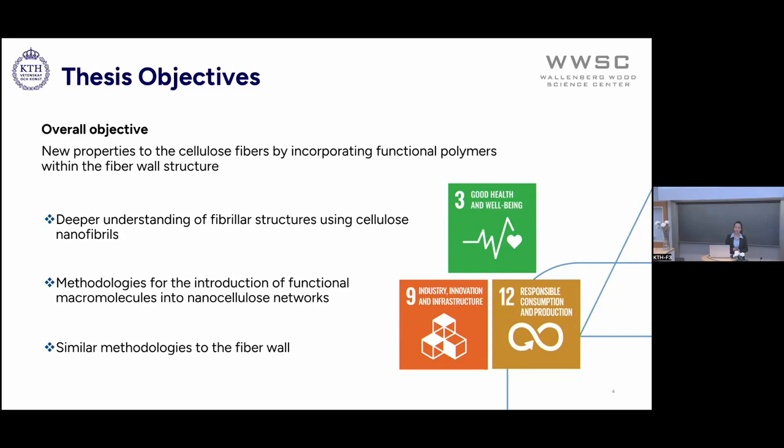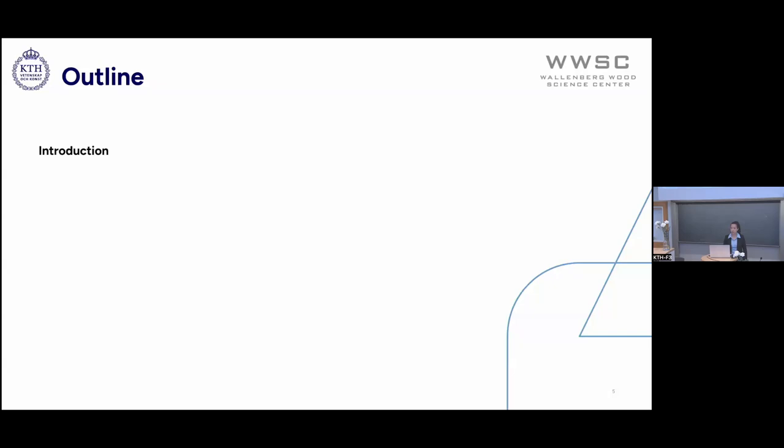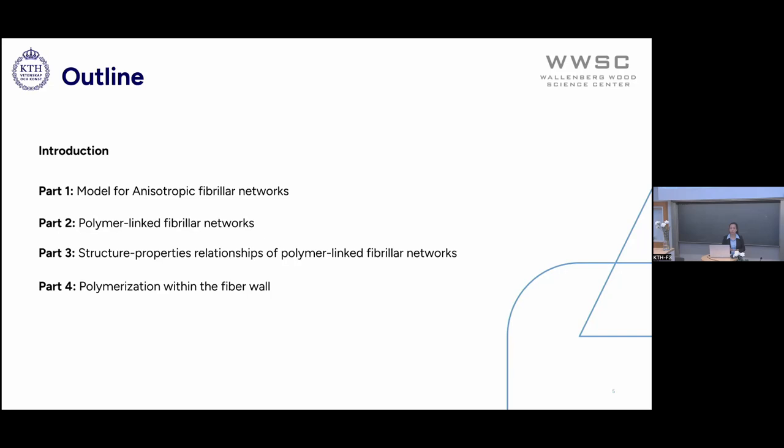In this presentation, I will go through a quick introduction of the background of the work. I'll introduce you to the model for anisotropic fibrillar structures. I'll cover polymer-linked fibrillar networks — how to make them and how I can control the structure-property relationships. I will show you how I do polymerization within the fiber wall, and then I'll conclude with some summary and conclusions.